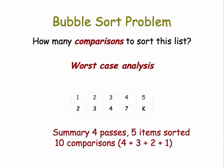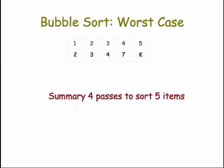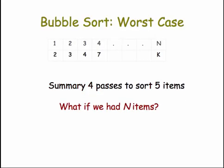So after four passes you've sorted the five items and it took a total of ten comparisons. In this worst case example for bubble sort, where the cards are in exactly the wrong order, it took us four passes to sort five items. If we had n items, that would take n minus one passes.